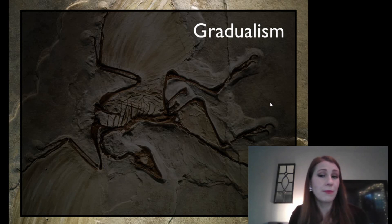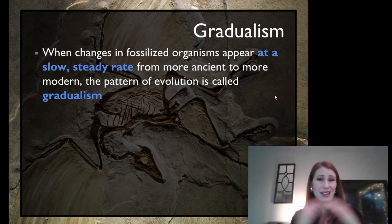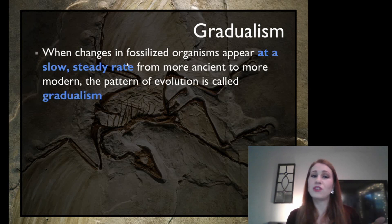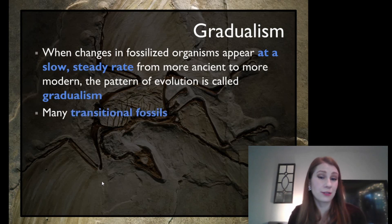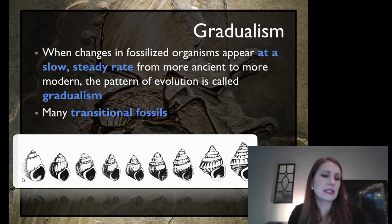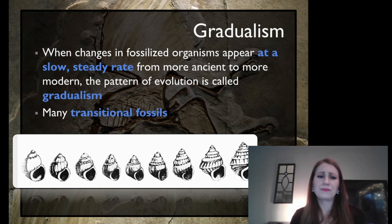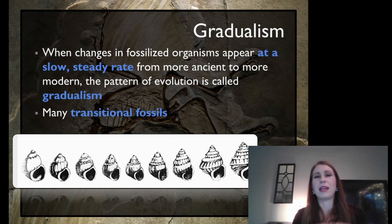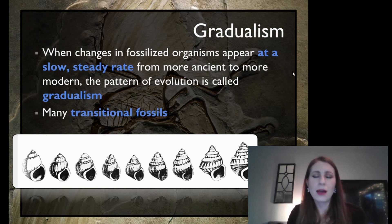There are a couple of patterns by which the fossil record can be interpreted. The first is gradualism — a slow, steady rate of change from something more ancient to something more modern. In gradualism, there are lots of transitional fossils. For example, we start with an older, smoother shell, and over time it shifts to a different type of shell. You can tell how it got from one thing to another because there are many in-between steps — transitional fossils — found. This does occur with some things we observe, but not everything, so it can be tricky to always apply gradualism as a pattern.